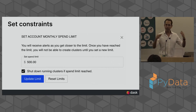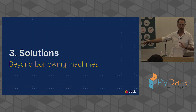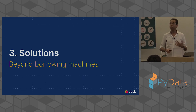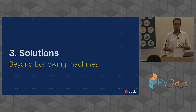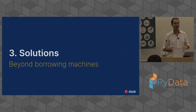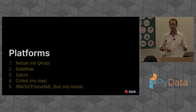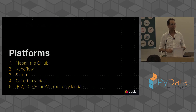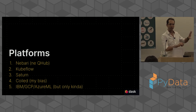I scared you with the iceberg. There's way more to talk about but I've got seven minutes left, so I'm going to talk about solutions. I'll go through a few: Nebari, previously called QHub, Saturn Cloud, and Kubeflow. I asked for slides from all those active projects — Nebari slides were the best, so we'll spend the most time there, then a little bit about Coiled. There are also big companies with Dask solutions — IBM, GCP, Azure ML — but I have yet to find someone who uses them and likes them, so I recommend other options instead.